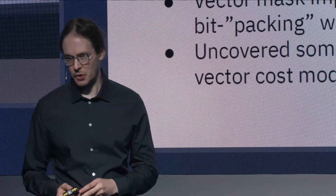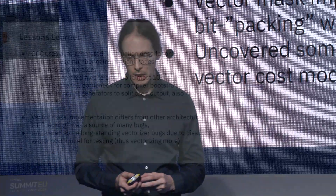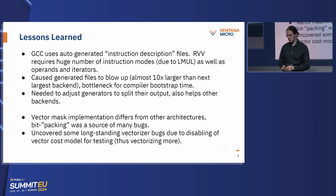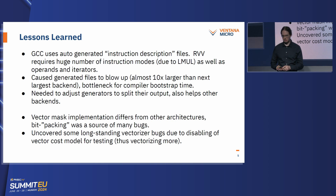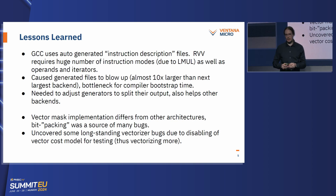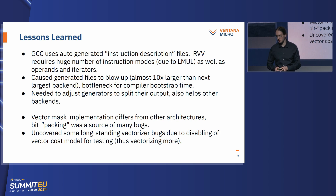Another interesting thing is the vector mask implementation of RVV is different from others in that we need to bitpack our masks — others don't do that. This was a source of many bugs throughout the GCC 14 development cycle. Also, while developing the RVV implementation, we disabled the vector costing model — we basically vectorized everything possible — and this led to us discovering very long-standing bugs, sometimes five or six years untouched, which we found and fixed throughout our development cycle.